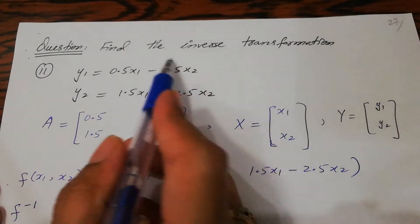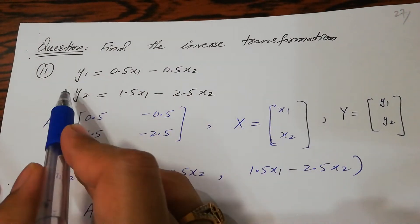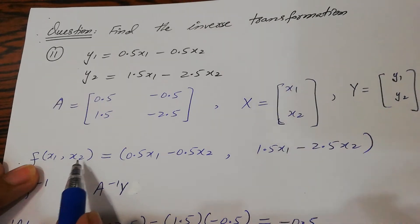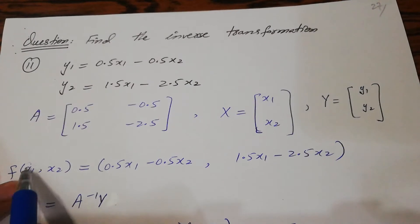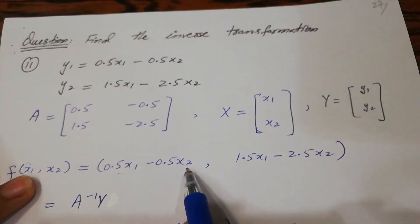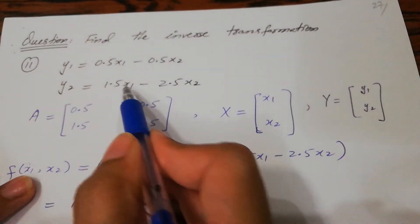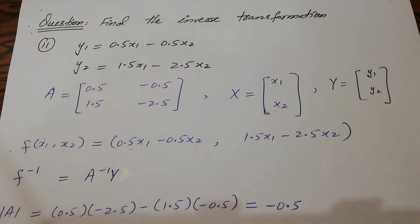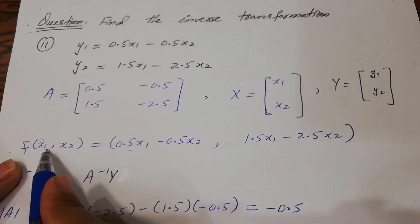From this system of equations you can write the transformation f(x1, x2). It is 0.5x1 minus 0.5x2, 1.5x1 minus 2.5x2. This is your general transformation on x1, x2.